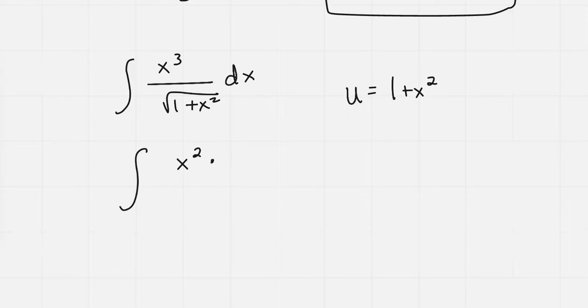If I make that x squared and say the x cubed is x squared times x, and then I just have my dx still, all over the square root of 1 plus x squared, then I see that x squared pop out. Since u equals 1 plus x squared, I can also write x squared equals u minus 1, just rearranging it a bit.